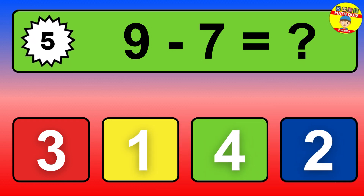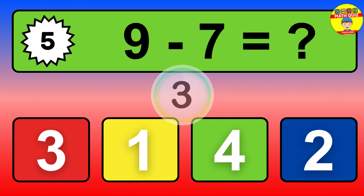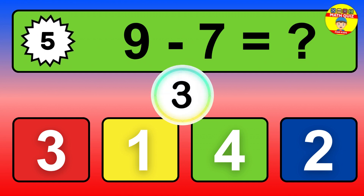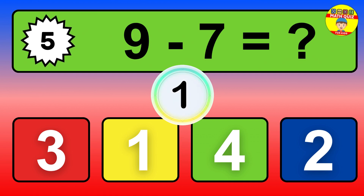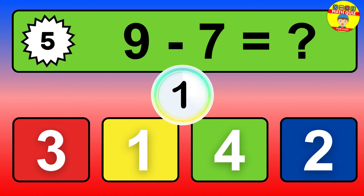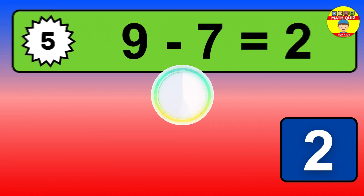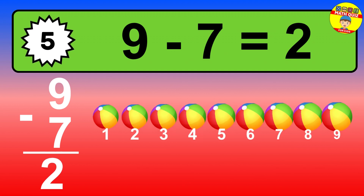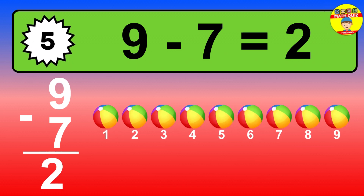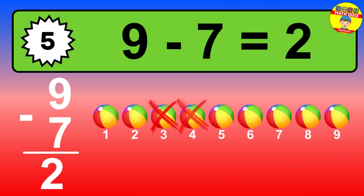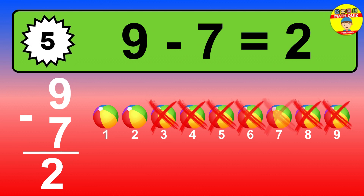Question 5. 9 minus 7 equals what? So the answer is 9 minus 7 is 2. Let's count it. 1, 2.